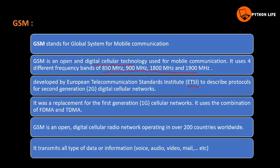2G supports data services. 3G builds on 2G. 4G supports video calls and more. GSM was a replacement for the first generation cellular network - the first generation cellular network is replaced by GSM.